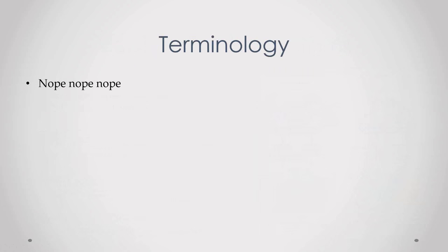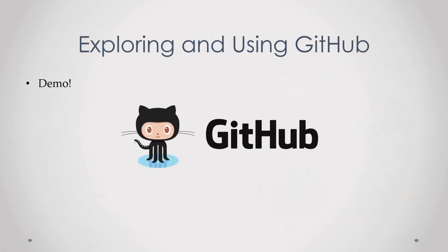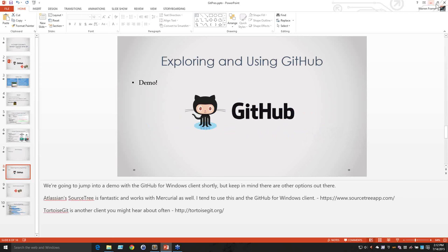Now it is time for demos. We're going to be looking at the GitHub for Windows client, though I want to highlight there are some other clients out there. Atlassian SourceTree is a great option — I tend to use that alongside the GitHub for Windows client. TortoiseGit is another popular one, but I haven't personally used it that often.